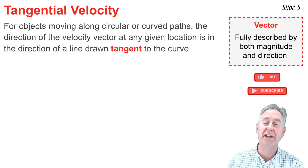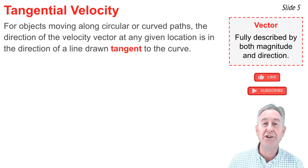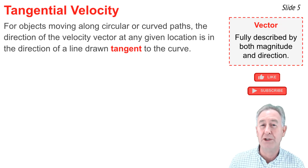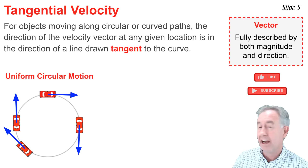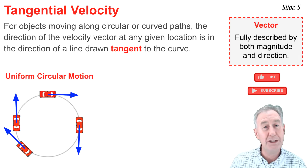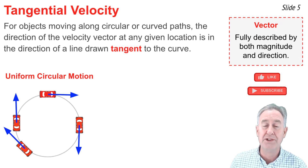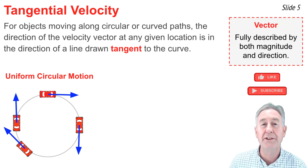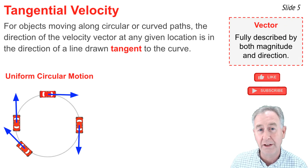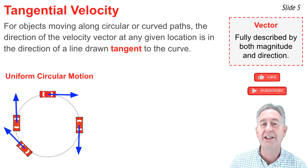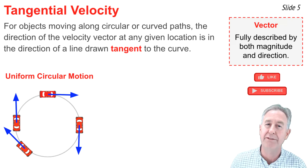As mentioned earlier, velocity is a vector that has a magnitude and a direction. For objects moving in circles or along curved paths, the direction of the velocity vector is tangent to the circle at any given location along the perimeter. This is a top view of a car moving in a circle at a constant speed — uniform circular motion. The blue arrows represent the velocity vectors. Their length represents the magnitude of the velocity, and their direction is tangent to the circle, touching it at one location only. The size of the velocity vector is constant because it's uniform circular motion.